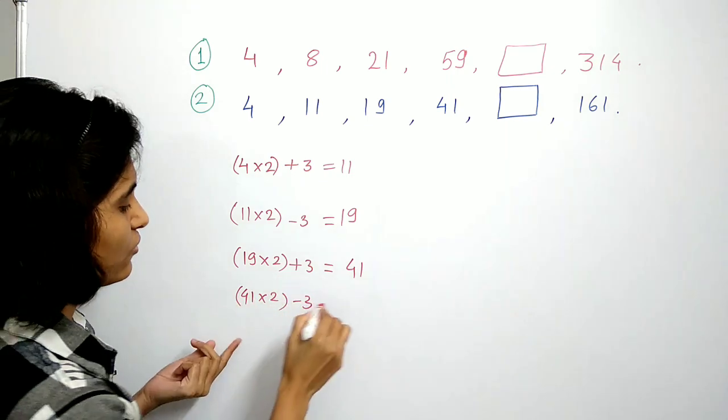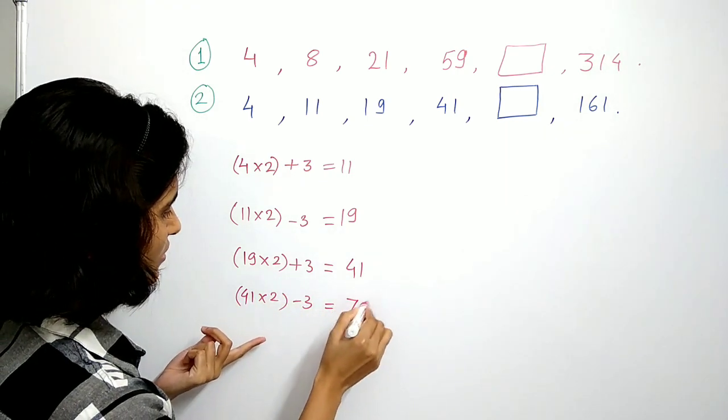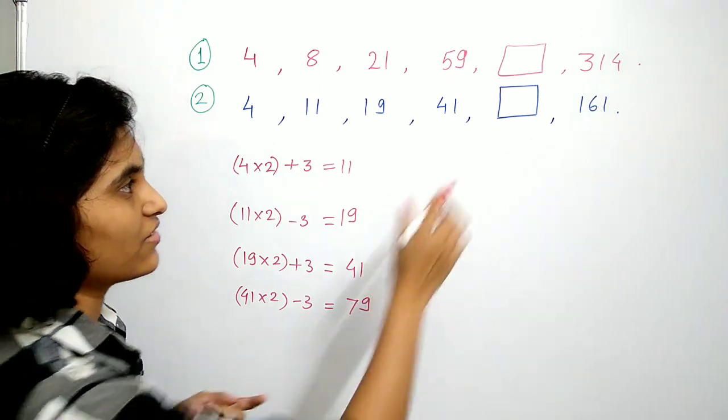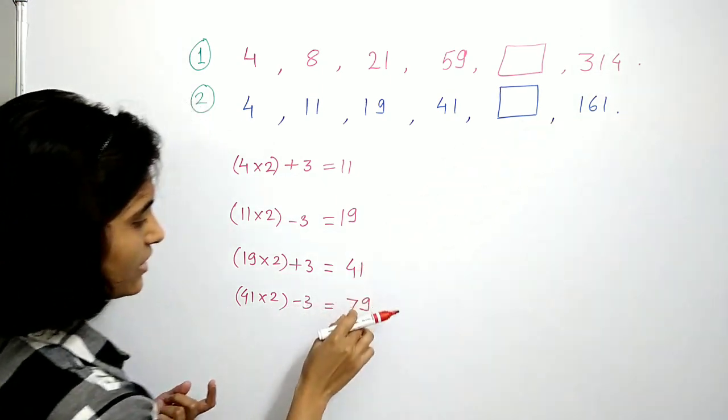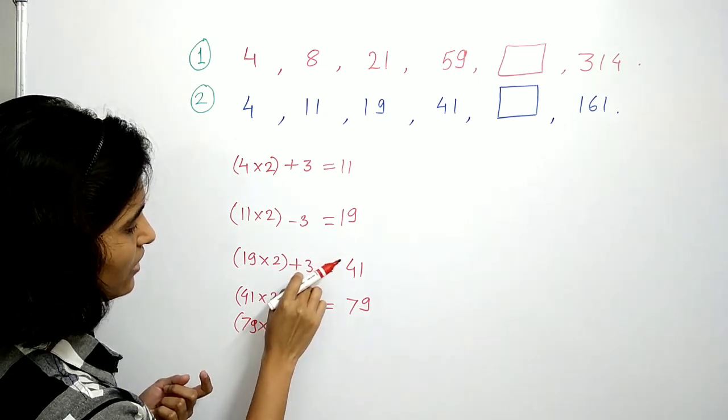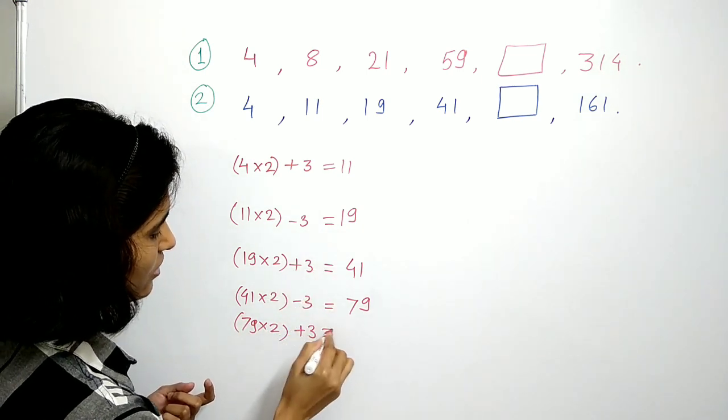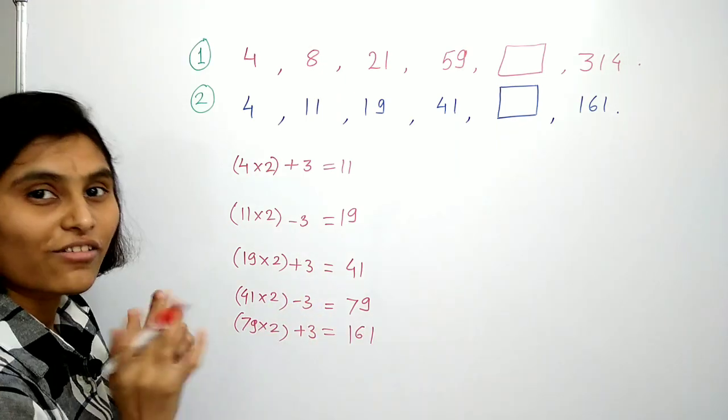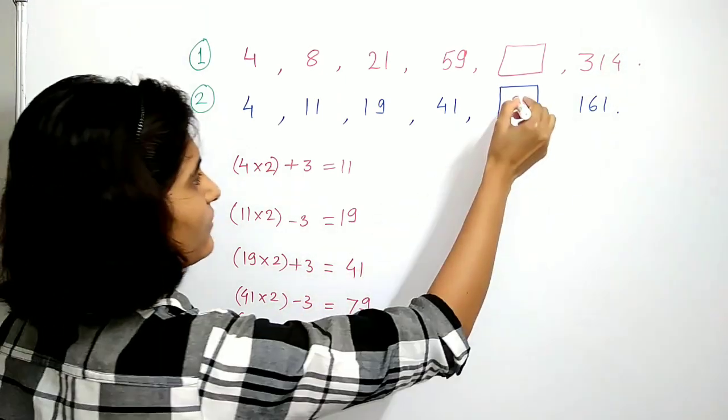To check this answer is correct or not, take 79 times 2. Plus 3, minus 3, plus 3, which gives us 161. So the missing digit is 79.